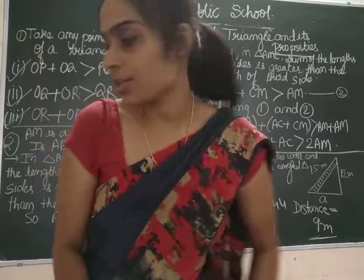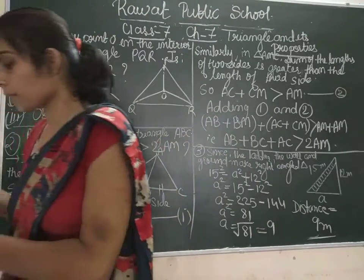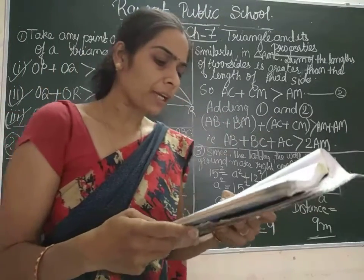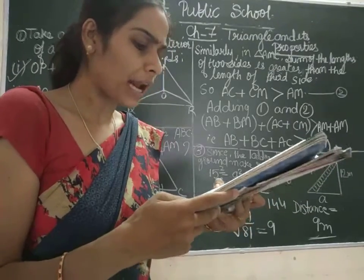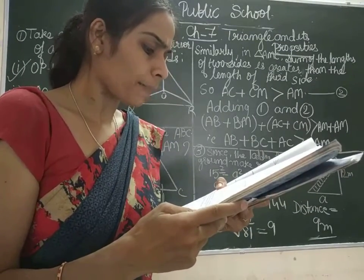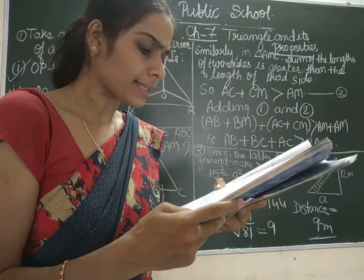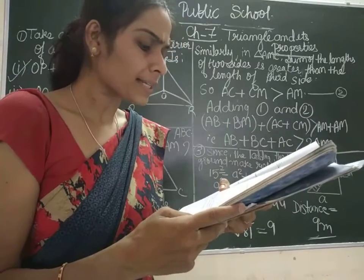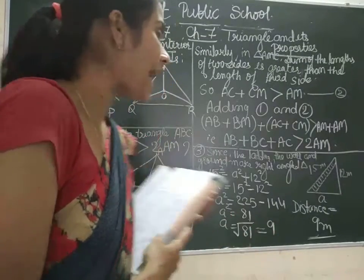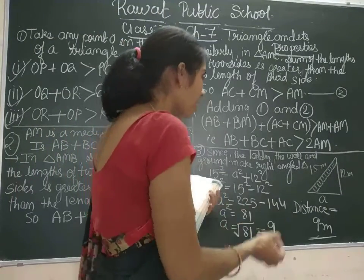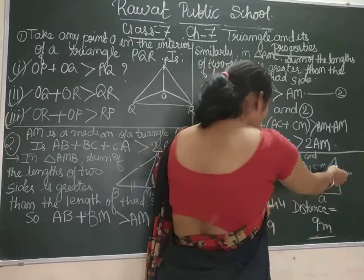Now, the third question says, a 15 meter long ladder reached a window 12 meter high from the ground on placing it against a wall at a distance A. Find the distance of the foot of the ladder from the wall. I have made the figure here. Here, this is the wall.